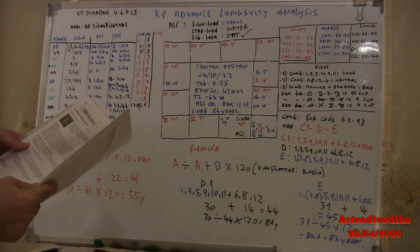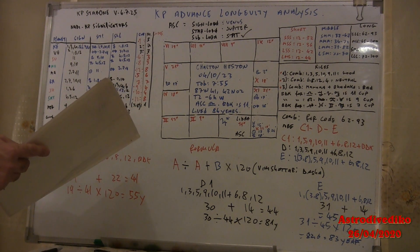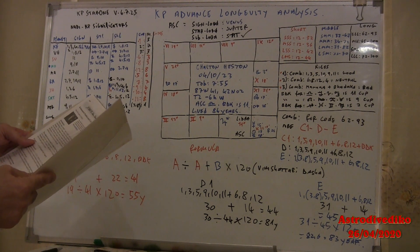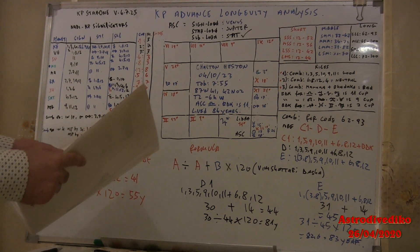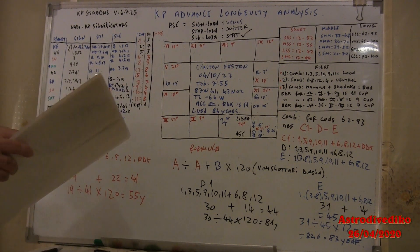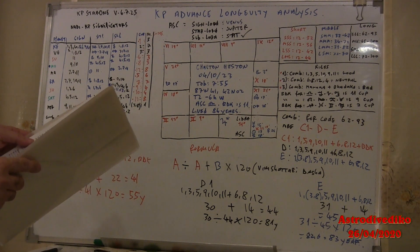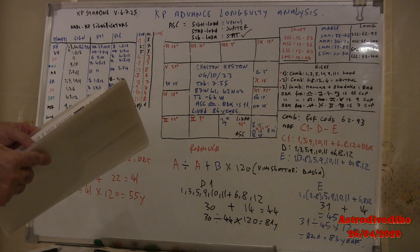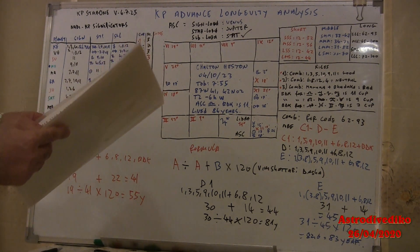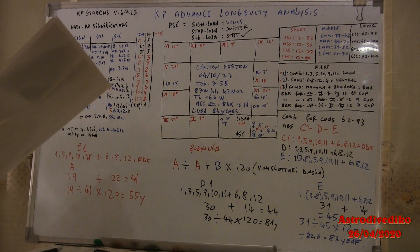...is similar to KP system. The difference is if a planet has no planets in his star, he does not signify that cusp or cuspal cups.